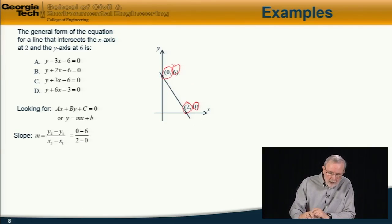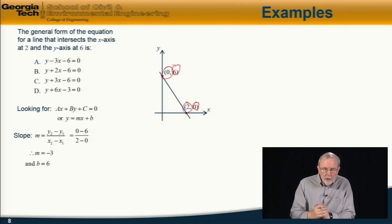And we also already know the intersect, or the intercept, is at b = 6. So, therefore, the equation of the line is y = -3x + 6.